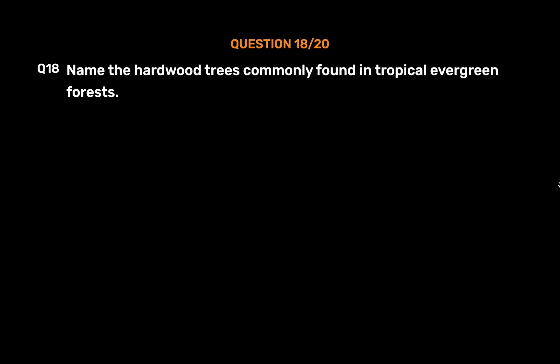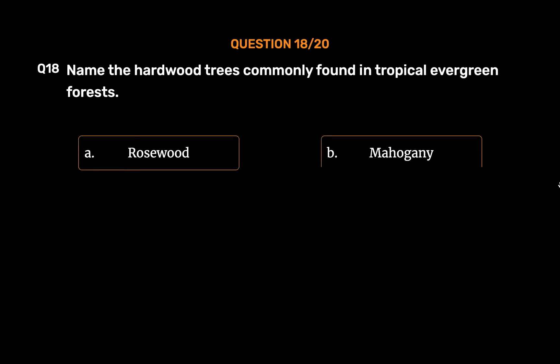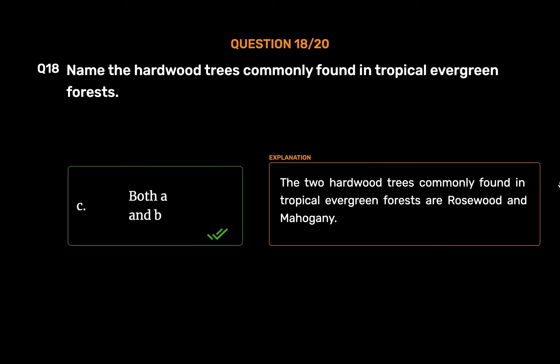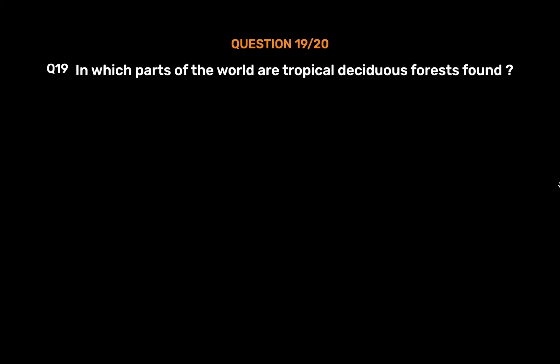Question number 18: Name the hardwood trees commonly found in tropical evergreen forests. Option A: Rosewood. Option B: Mahogany. Option C: Both A and B. Option D: None of these. The correct answer is Option C: Both A and B. The two hardwood trees commonly found in tropical evergreen forests are rosewood and mahogany.